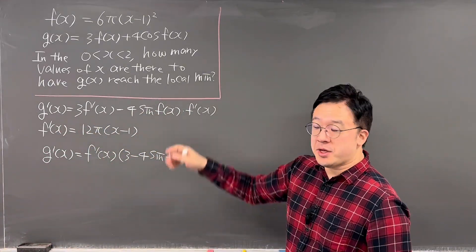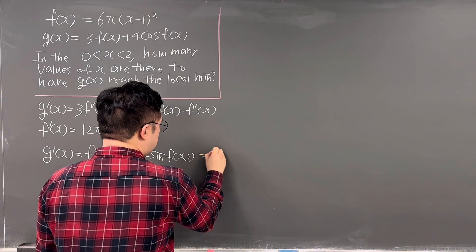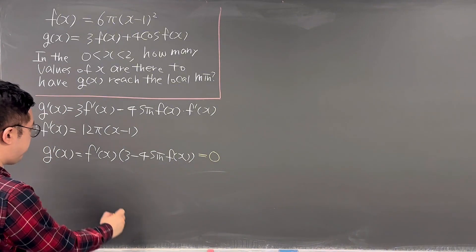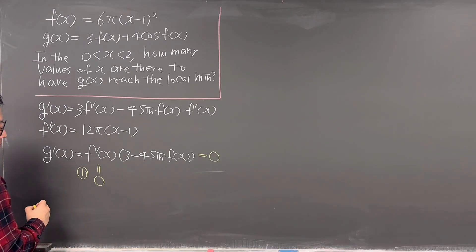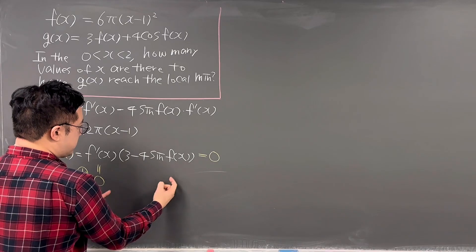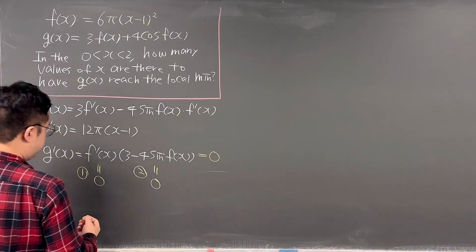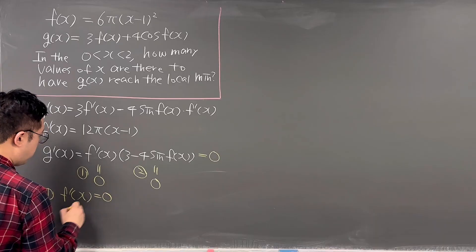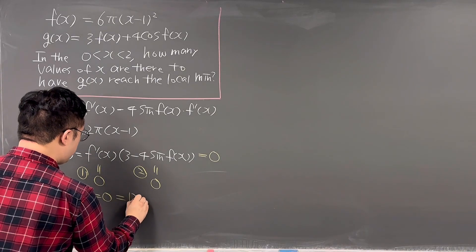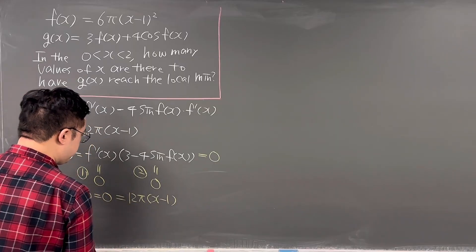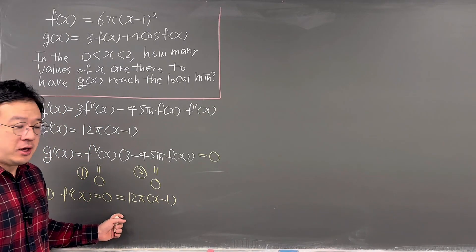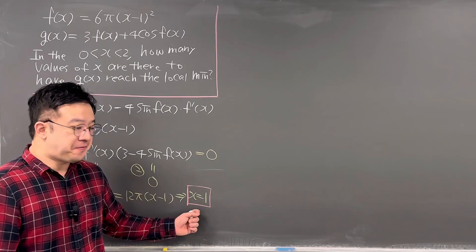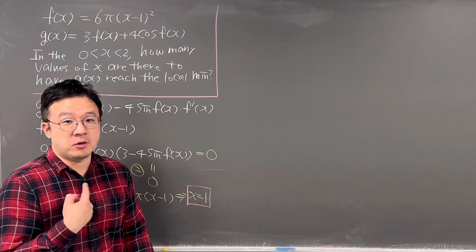Since we're looking for local minima, we set g′(x) = 0. Case 1: f′(x) = 0. We know f′(x) = 12π(x−1), so 12π(x−1) = 0 gives x = 1. So x = 1 is a critical number — it could be a local min or local max, which we'll determine later.